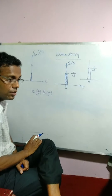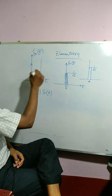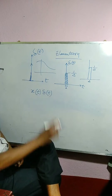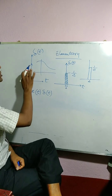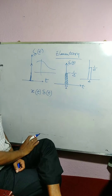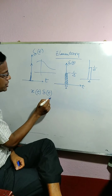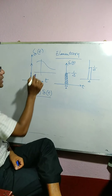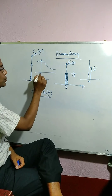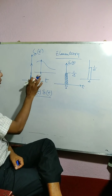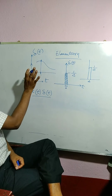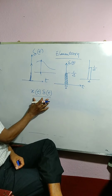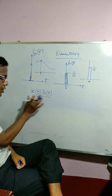What will happen? You consider a signal x(t) and you are multiplying this signal with delta(t). This multiplication will have no value other than at t equals to 0, because when you are multiplying this signal with delta(t), delta(t) has no value for t not equal to 0. Therefore, for t not equal to 0, x(t) into delta(t) will be 0.